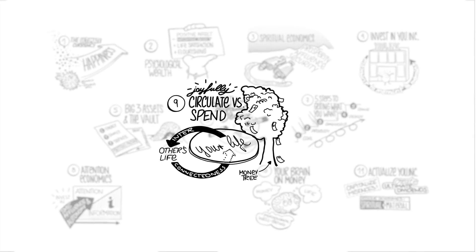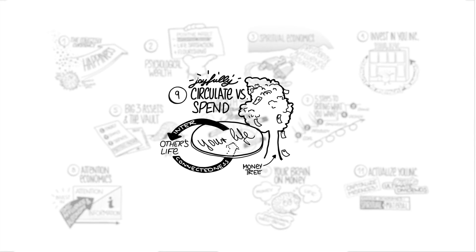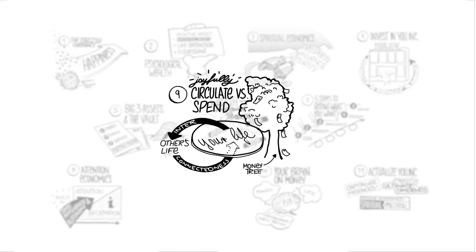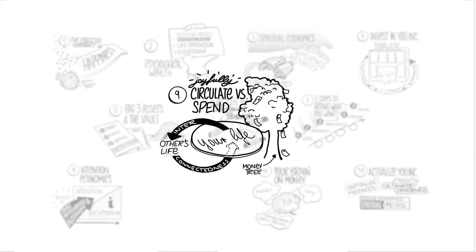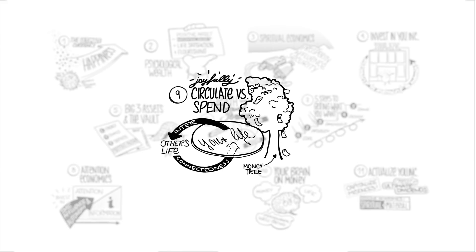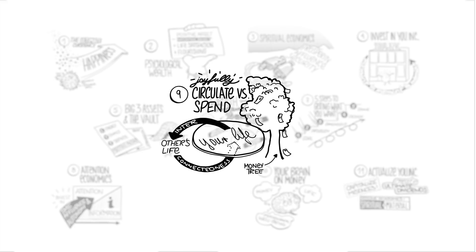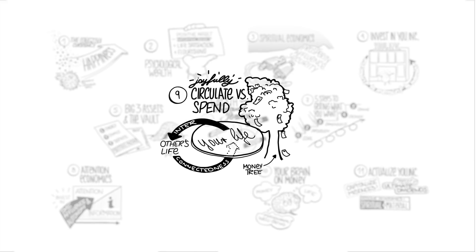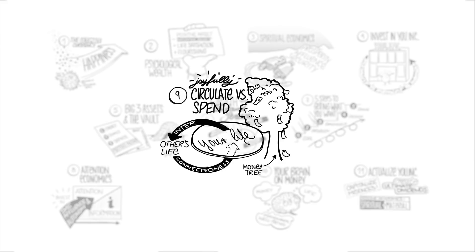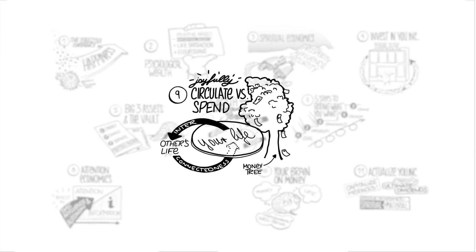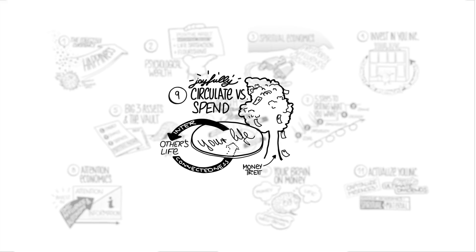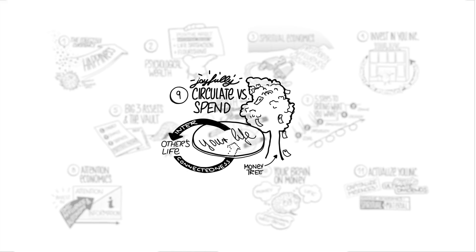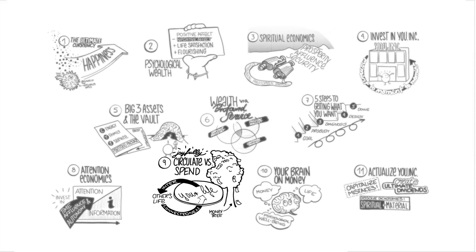Our ninth big idea is to circulate versus spend. We're going to talk about the importance of seeing that money is kind of like oxygen. It comes in and it goes out. You want to circulate deliberately and consciously and see the interconnectedness between the money that's coming into your life, thanking all the people who are supporting you, and then the money that's going out and thanking all the people who are contributing to your well-being. We'll also talk about the fact that money does, in fact, grow on trees.